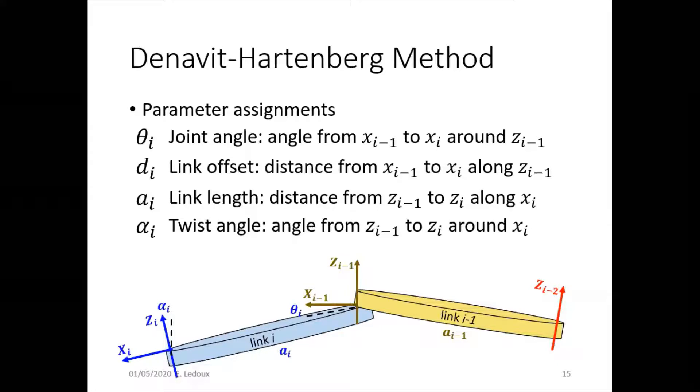Now how do we know what to put in for each parameter? Theta i is the joint angle, the angle that each joint rotates. Another way to look at it is the angle between each X axis and the one before it. So theta i is the angle between X i and X i-1 for link i.